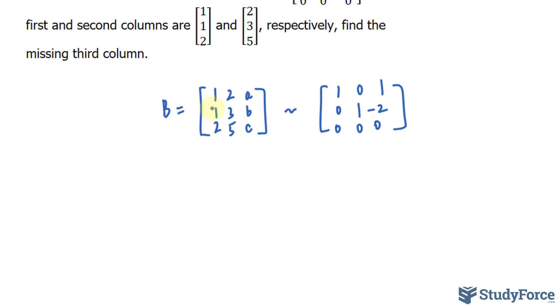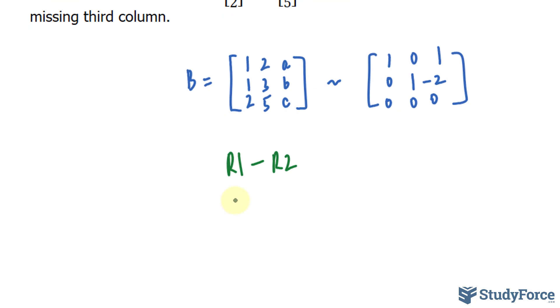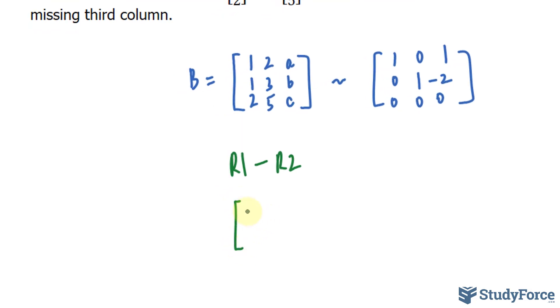So the very first thing that I want to do is make sure that this element and that element are 0 so that it corresponds to what we have here. So I'll take row 1 and subtract row 2. That is, row 1 will remain the way it is, and row 2 will be changed based on that operation. So I'll rewrite 1, 2, A. 1 minus 1 is 0. 2 minus 3 is -1. A minus B is A minus B, and row 3 remains the way it is.